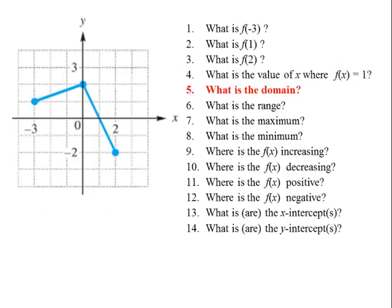What is the domain? We have an ending point here, so the domain is going to start at negative 3. Since this is a solid dot, x can equal negative 3. All these x values have a spot on this graph until we get to x equals 2, which is also a solid dot, so it can equal 2. In interval notation we write: bracket negative 3 to positive 2 bracket.